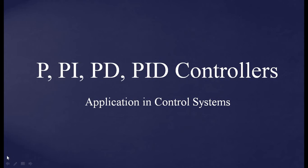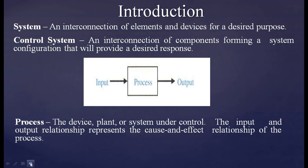Let us start with the controllers. Introduction regarding the basics of systems: a system is an interconnection of elements and devices for a desired purpose. What is a control system? A control system is an interconnection of components forming a system configuration that will provide a desired response. The figure shows one process which has few inputs and few outputs.